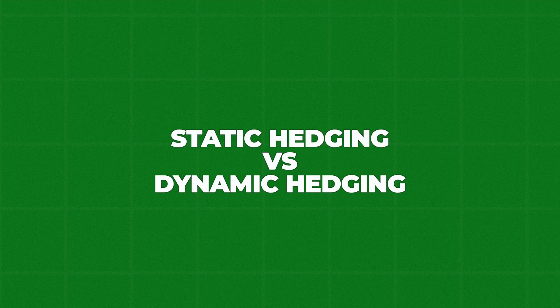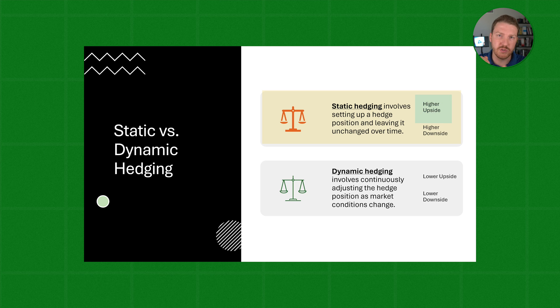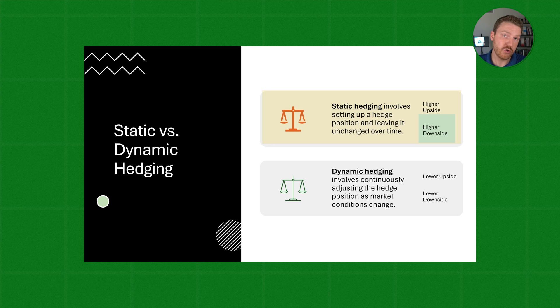That brings us to static hedging versus dynamic hedging. A static hedge is one where we offset our option position with a certain number of purchases or sales of the underlying stock, and then we just set it and forget it — we set up our hedge once and leave it forever. This has a higher upside because our Delta will move away from zero as time passes and the stock price changes, and it also has a higher downside because this Delta exposure can drive us to achieve either huge gains or huge losses.